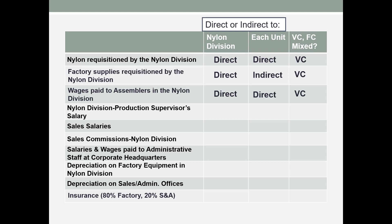The nylon division production supervisor's salary: this supervisor works for the nylon division, so it is direct to the division. However, it is considered an overhead cost in that division, and so it will be indirect to each unit. Salaries are generally fixed costs.